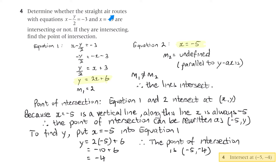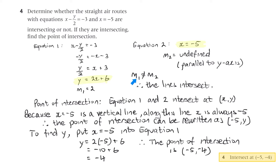Question 4: determine whether two straight lines are intersecting or not, and if so, find the point of intersection. Rearranging equation 1 into y equals mx plus b shows a slope of 2. Equation 2 is x equals minus 5 — a vertical line parallel to the y-axis with an undefined slope. Since m1 does not equal m2, the lines intersect.